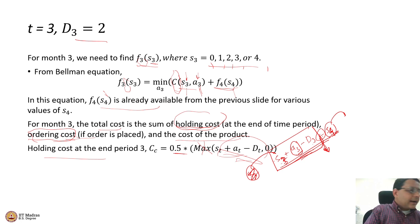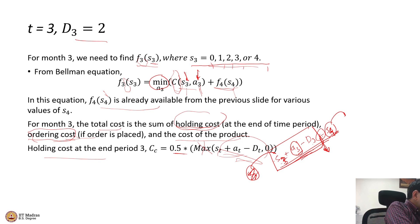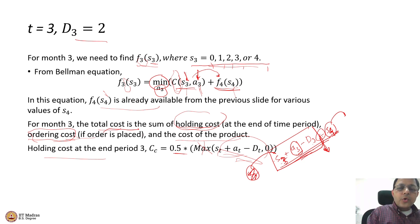Now, depending on where we find ourselves in time period 3 — that is, the value of S3, which can be 0, 1, 2, 3, or 4 — we take the appropriate action. The appropriate action is the one that minimizes the total cost: not just the immediate cost in time period 3, but the total cost including the subsequent impact on time period 4. So the action minimizing immediate cost plus future cost is the best action.